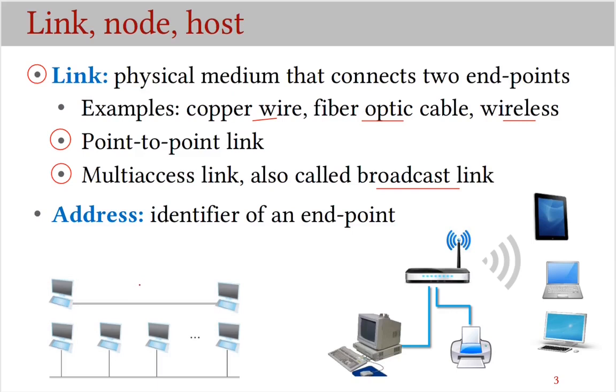Here is an example of a point-to-point link. This wire is connecting these two laptops. Here is an example of a multi-access link, so in this case this link is being shared by several computers. Wireless links are multi-access, so this Wi-Fi access point is connected to this tablet, laptop, and desktop. It's also connected to this printer and desktop by point-to-point links.